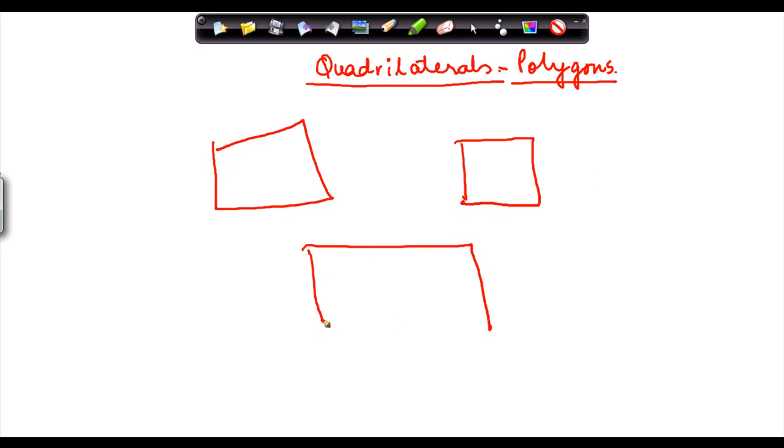All these polygons are quadrilaterals. Why? Because they all have four points. Right, now because they have four points.